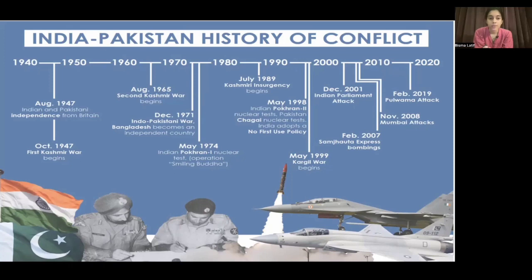As you all know, from 1947 to 1971 Pakistan was divided into East and West Pakistan. There was a civil war between the two, the East Pakistanis fled to India for help, and it resulted in a war. The outcome of this war was that East Pakistan became independent — now known as Bangladesh.